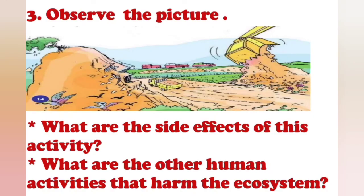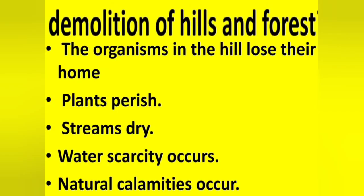We are going to the last activity. Observe the picture given and write answers to two sub-questions: what is the picture about, and what are the side effects of this activity? Also, what are other human activities that harm the ecosystem? The picture is about the demolition of hills and forests.